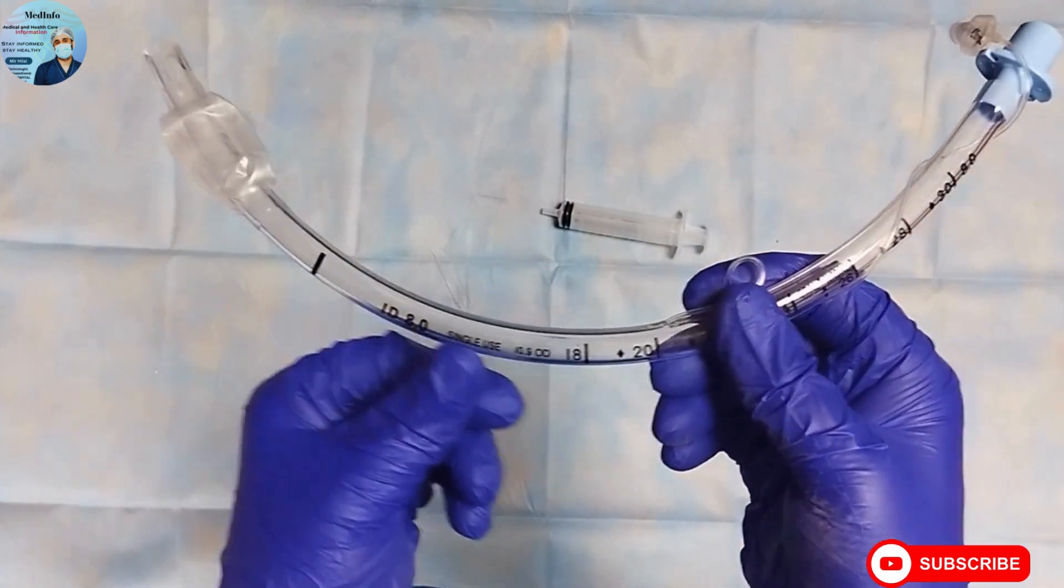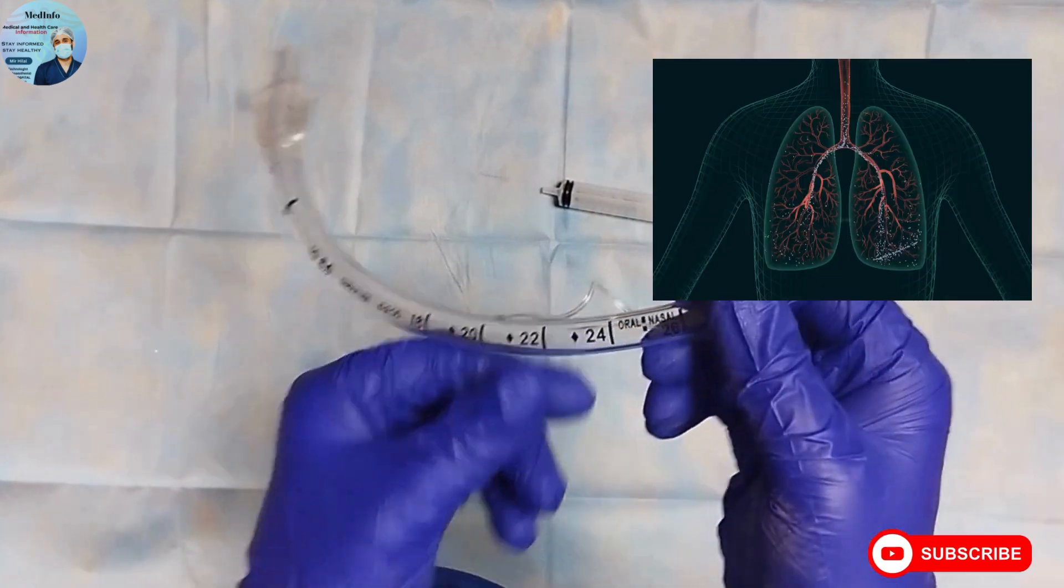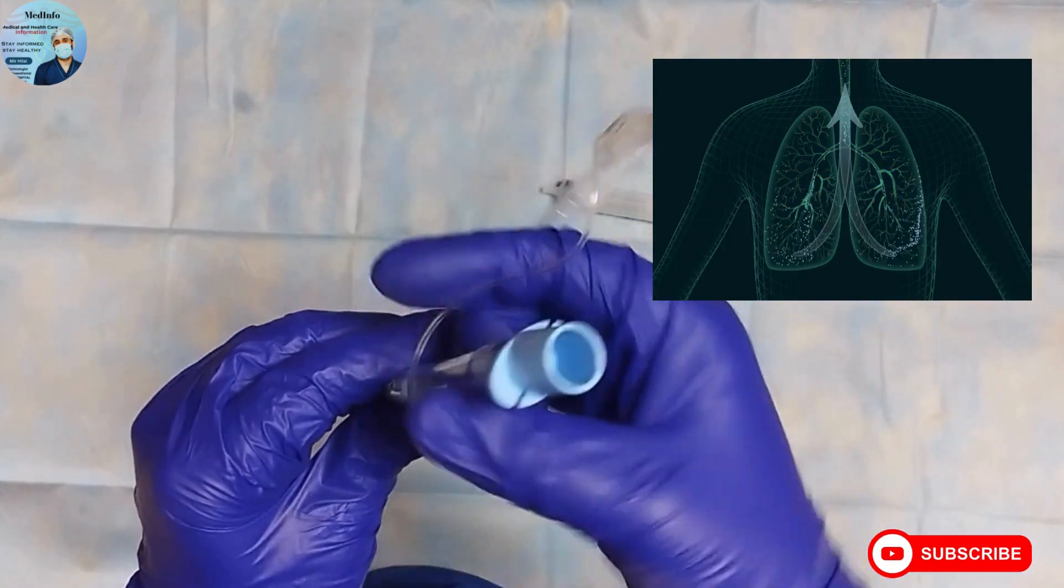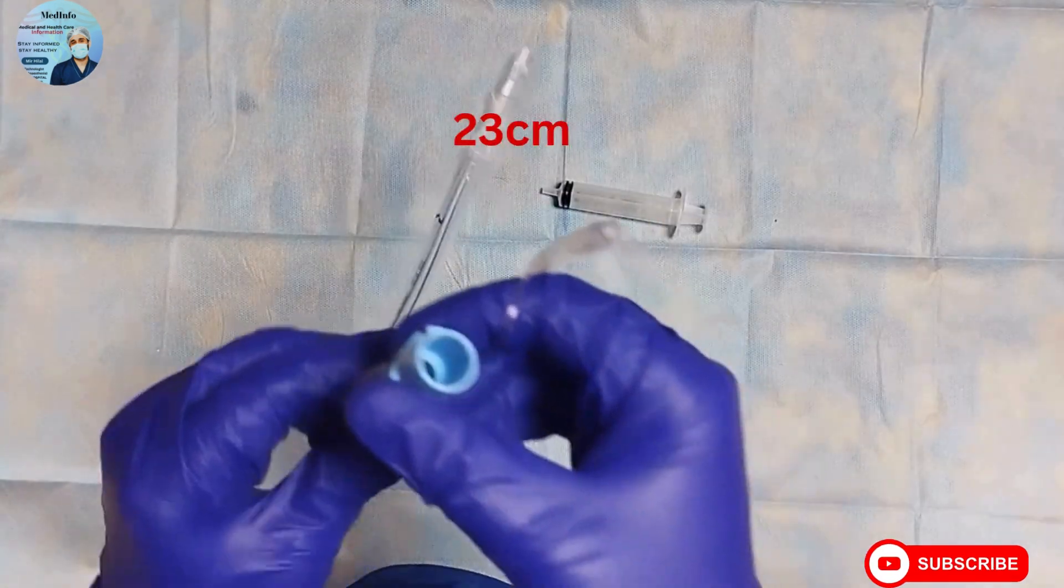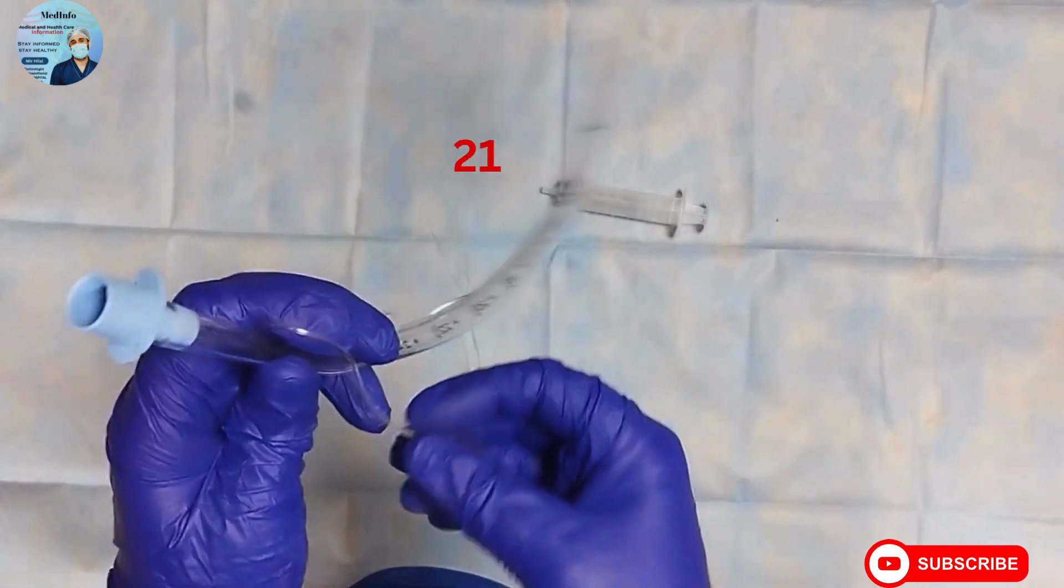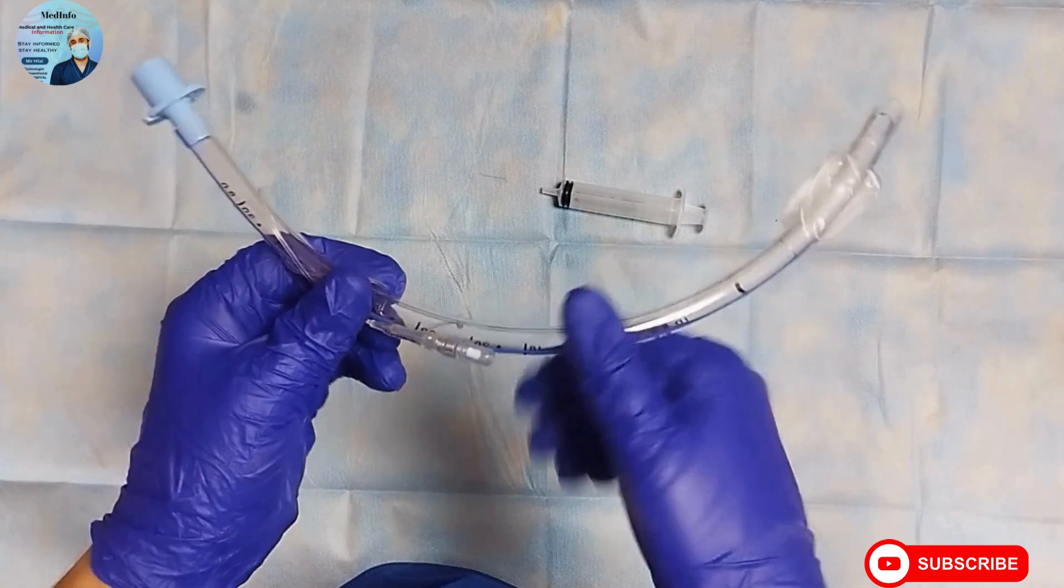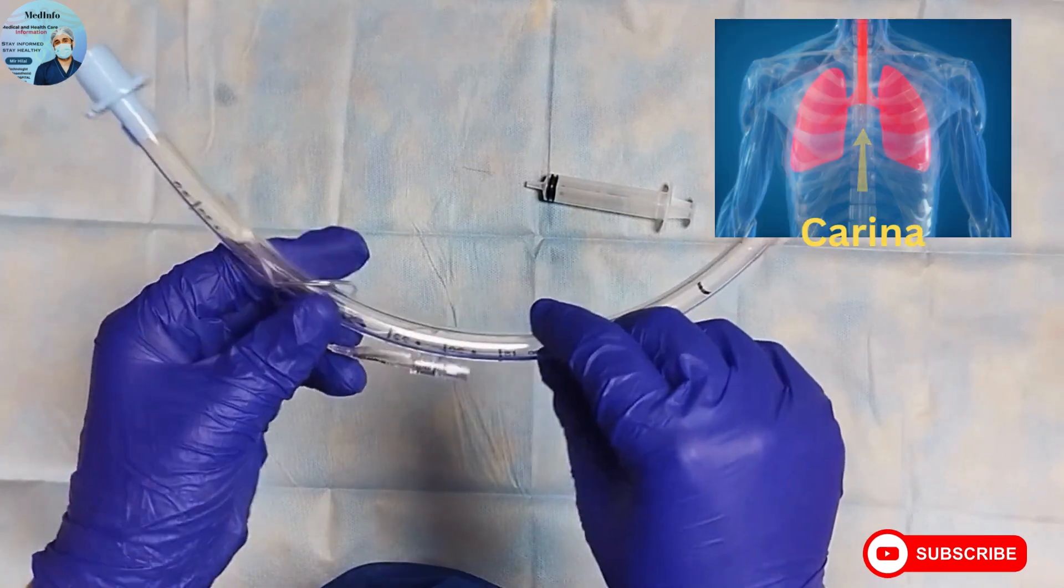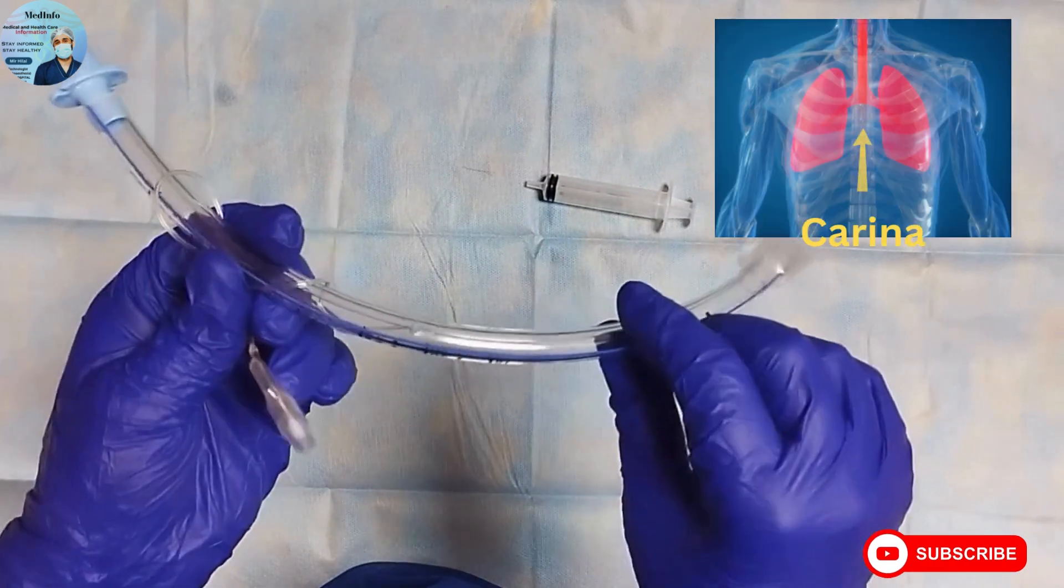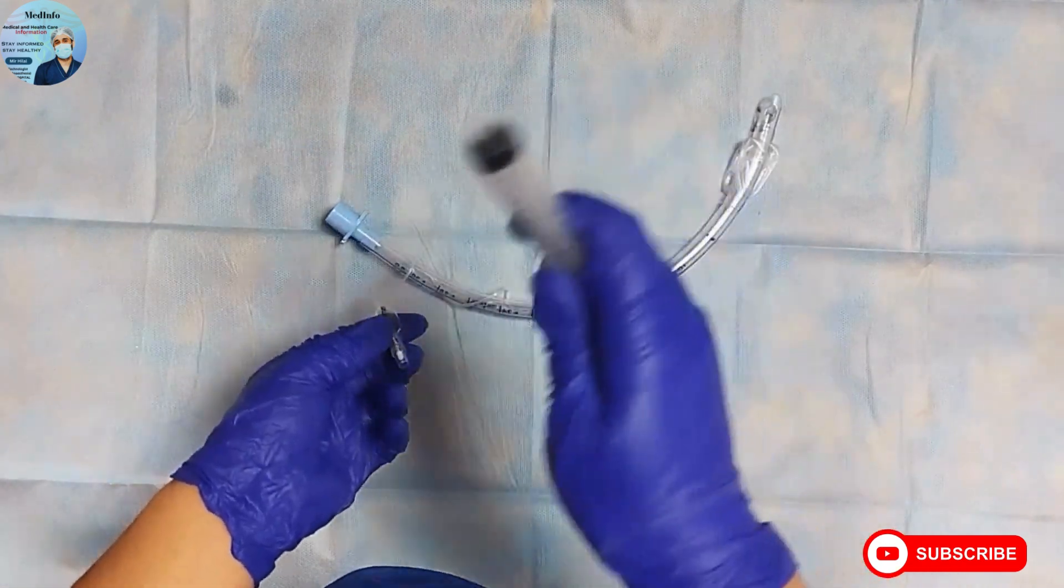This is 23 centimeters in adult males and 21 centimeters in adult females. For a general concept, the tip of the endotracheal tube should lie 4 to 5 centimeters above the carina. Again, to calculate the endotracheal tube length in children, I have provided the formula in the description of this video.